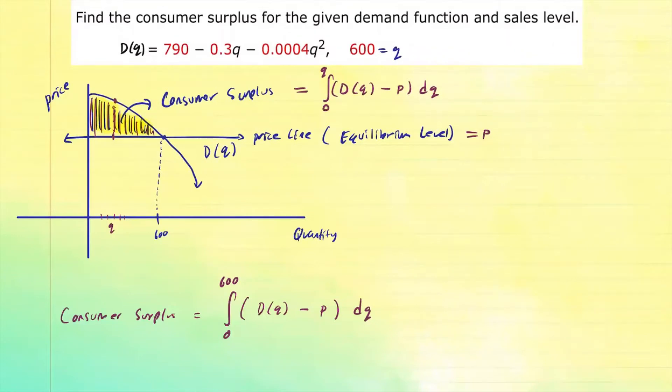So the price line is going to be this price right here, when the 600 units are sold. So we plug in 600 into our demand function. So that would be D(600), that is 790 minus 0.03 times 600 minus 0.004 times 600 squared.